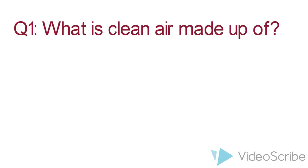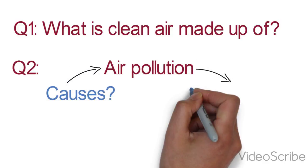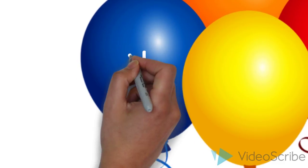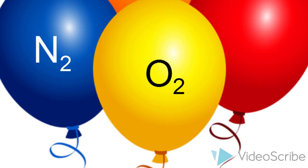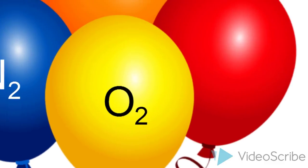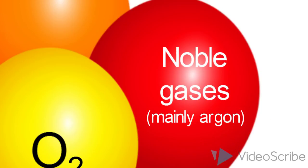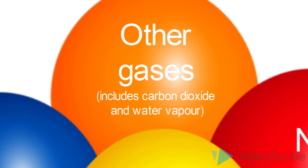Firstly, what is clean air made up of? And second, what causes air pollution and what are some of the effects of air pollution? As you know, air is a mixture of various gases. So the two main gases in clean air are actually nitrogen and oxygen. In addition to that, there are the noble gases, which consist mainly of argon, as well as other gases such as carbon dioxide and water vapour.